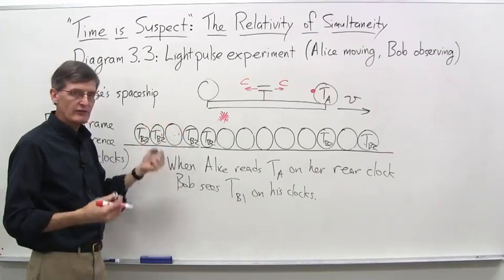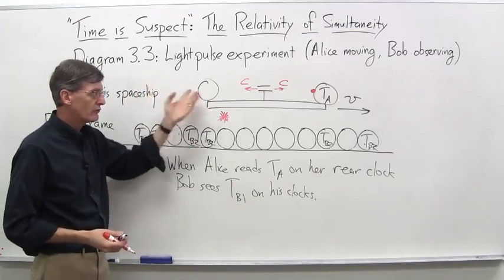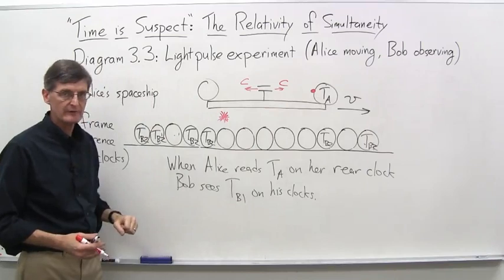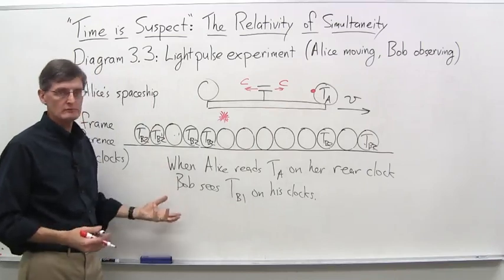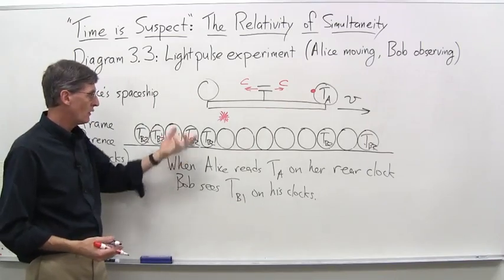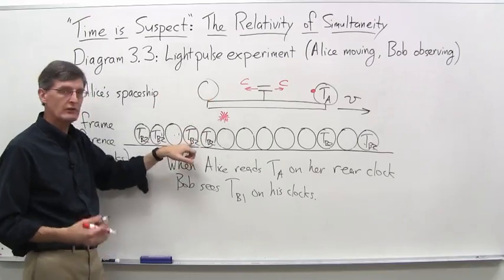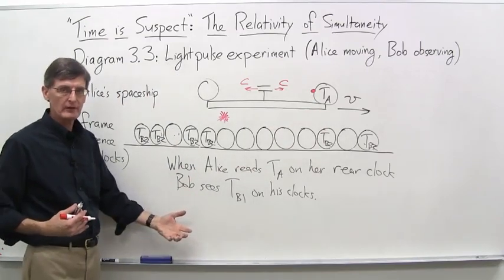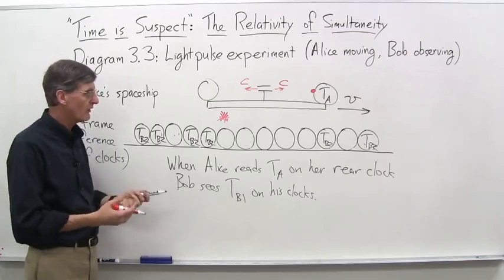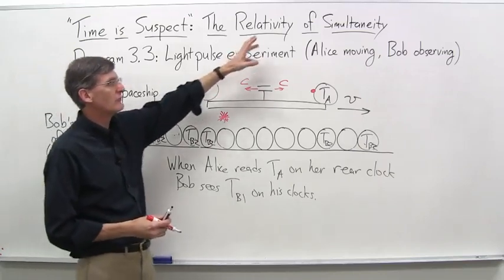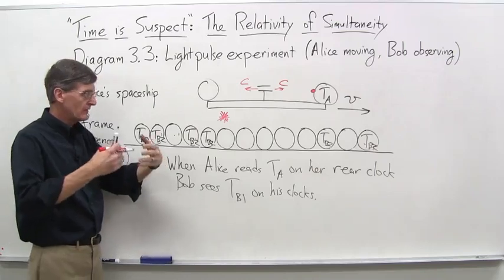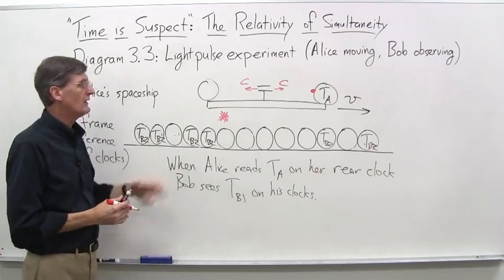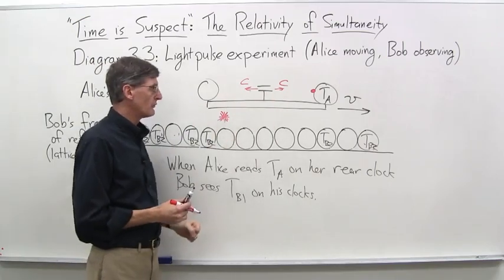That synchronized clocks, all Bob's clocks are synchronized in his frame of reference. Alice's clocks are synchronized in her frame of reference. Therefore, if you talk about simultaneous events, Alice is saying the two light pulse hits on her clocks were simultaneous events because they both occurred when the clocks read T sub A. Bob is saying no, they were not simultaneous events because one occurred, the first one over here occurred when my clock read TB1, and the second one over here occurred when my clock read TB2, and I know my clocks are synchronized.